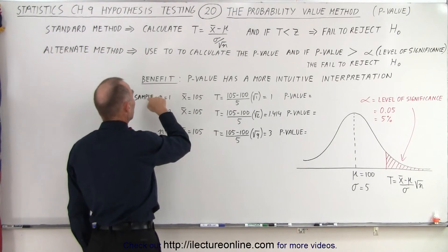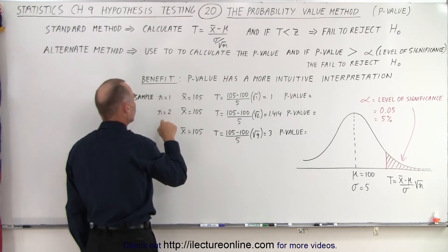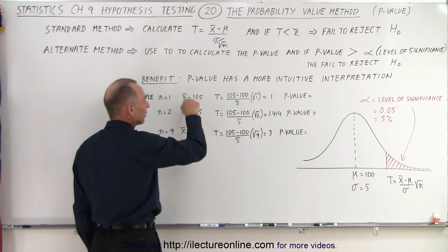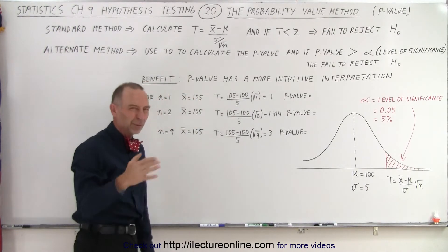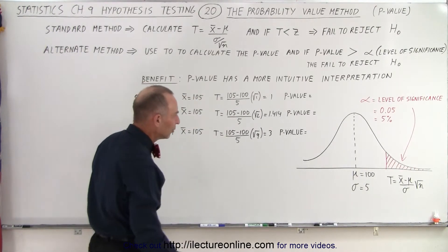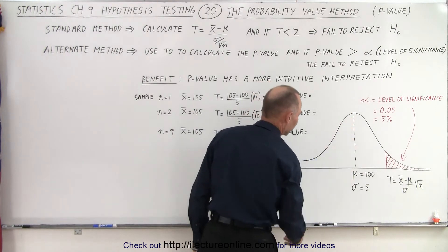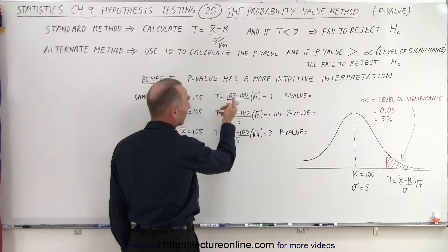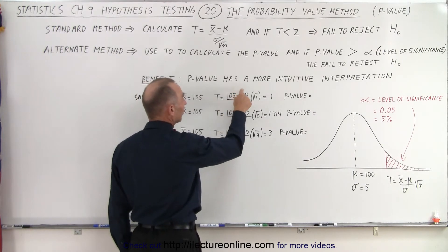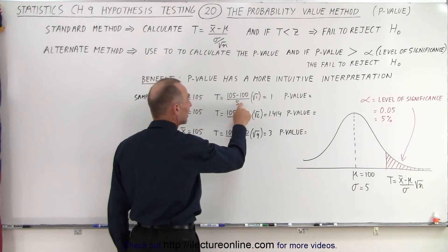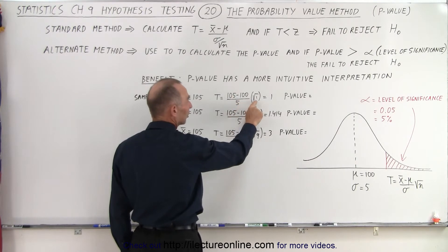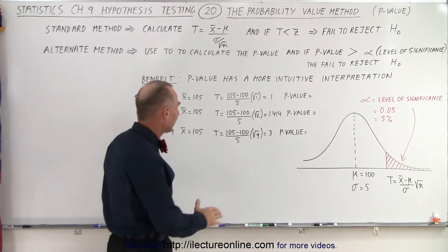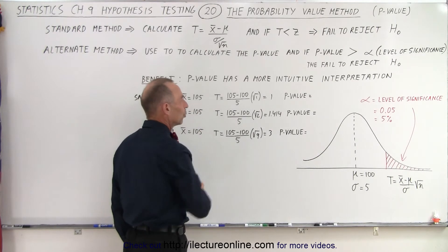Let's say we have sample sizes of 1, 2, and 9. In each case, the mean of the sample is going to be 105 — we're using the same numbers as before. The mean of the population is 100, and the standard deviation is 5. We first calculate the t-statistic. We take the mean of the sample and the mean of the population, take the difference between those two, and divide by the standard deviation. That would be 5 divided by 5, which is 1, multiplied by the square root of 1 — so we get a test statistic equal to 1.